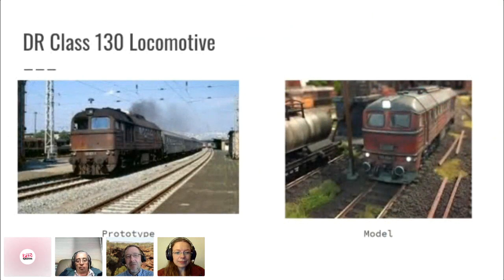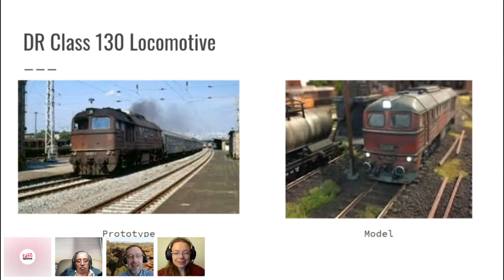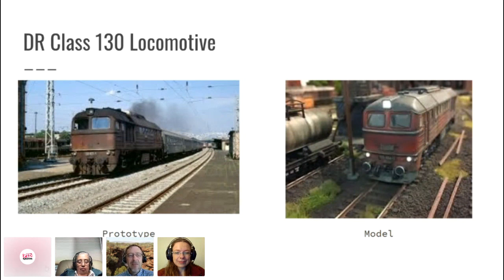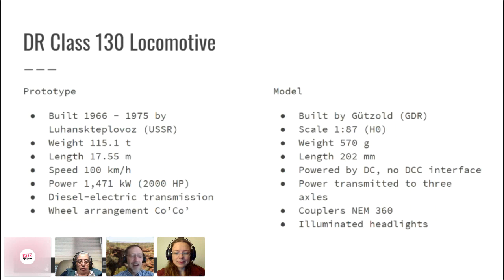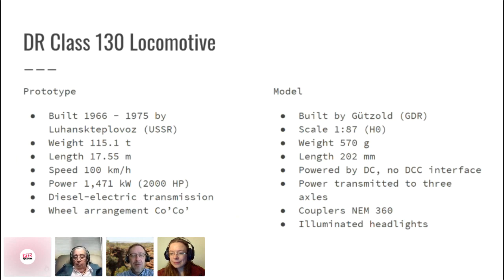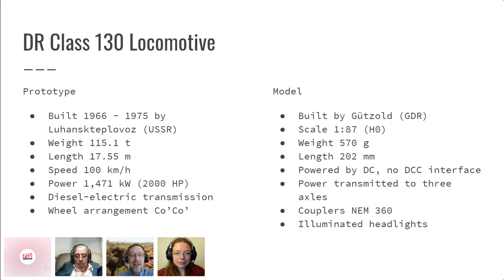My example is this locomotive — an East German prototype, class 130, of which there is of course a prototype and a model. The model is sitting on the bookcase across from my desk. We can take this from the standpoint of there being a concept of a class 130 locomotive, expressed as a prototype and as a model. The prototype was built in the 60s and 70s by Luhansk Teplovos in what is now Ukraine — back then the USSR. It weighs 115 tons, is almost 18 meters long, runs up to 100 kilometers an hour, has 2000 horsepower, diesel-electric, and a certain wheel arrangement.